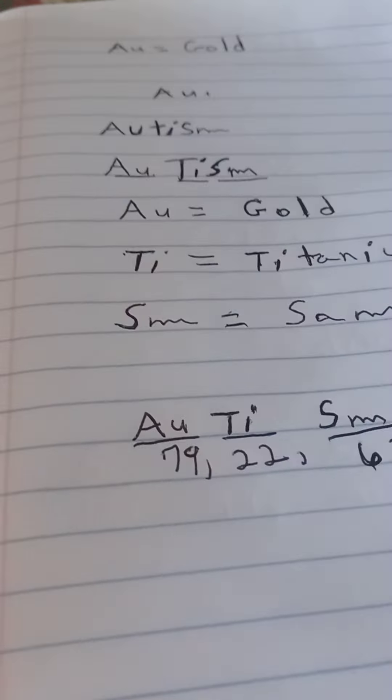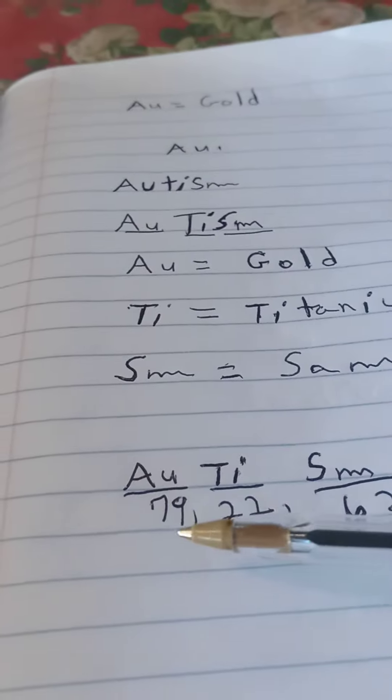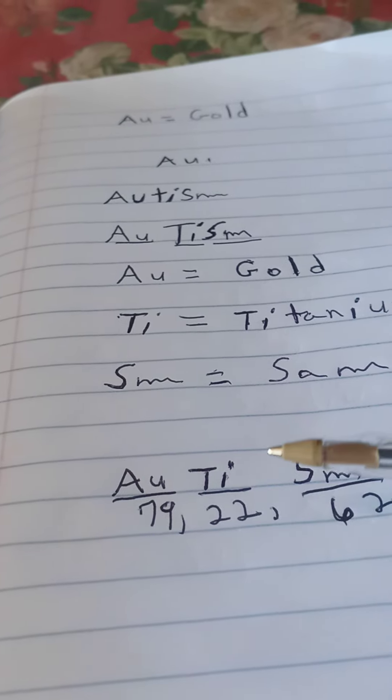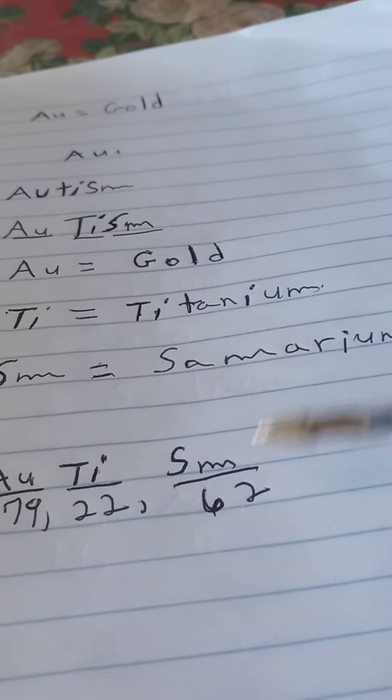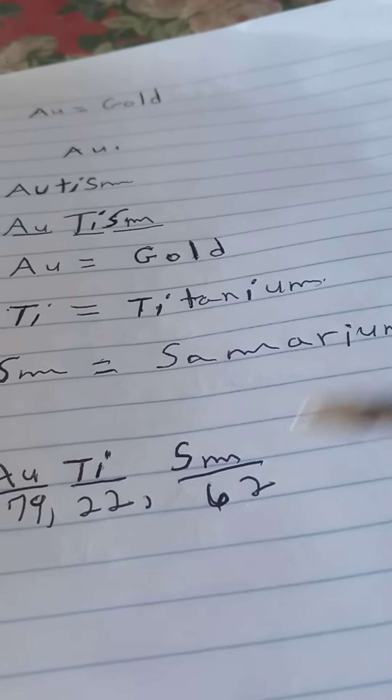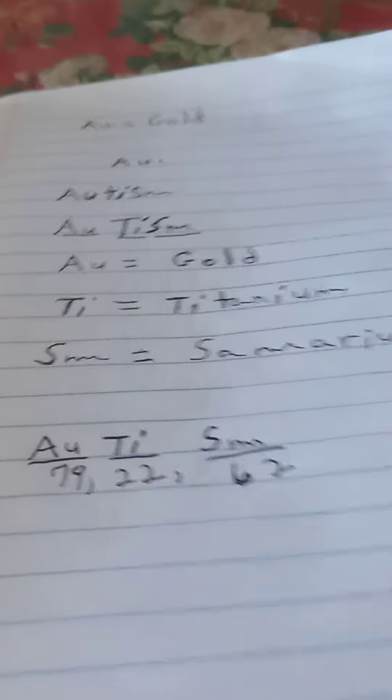Now, if you want to know the atomic number, A-U, which is for gold, is 79. T-I for titanium is 22. And for samarium, capital S-M is 62. Atomic number, if you want to study the atomic number.